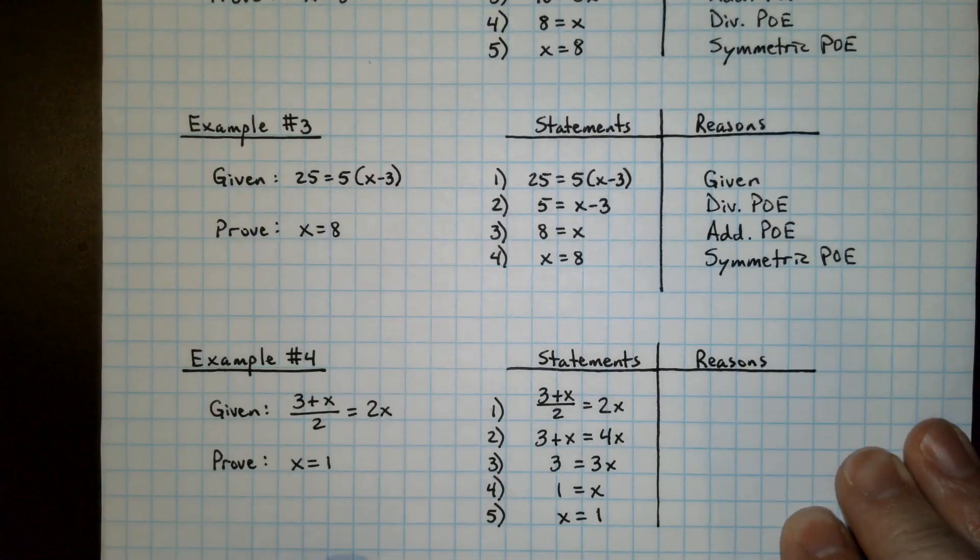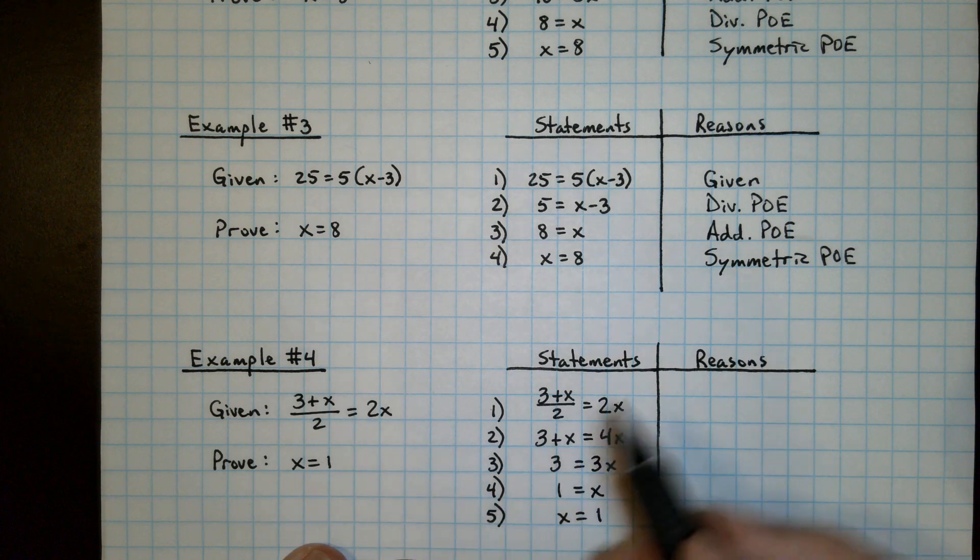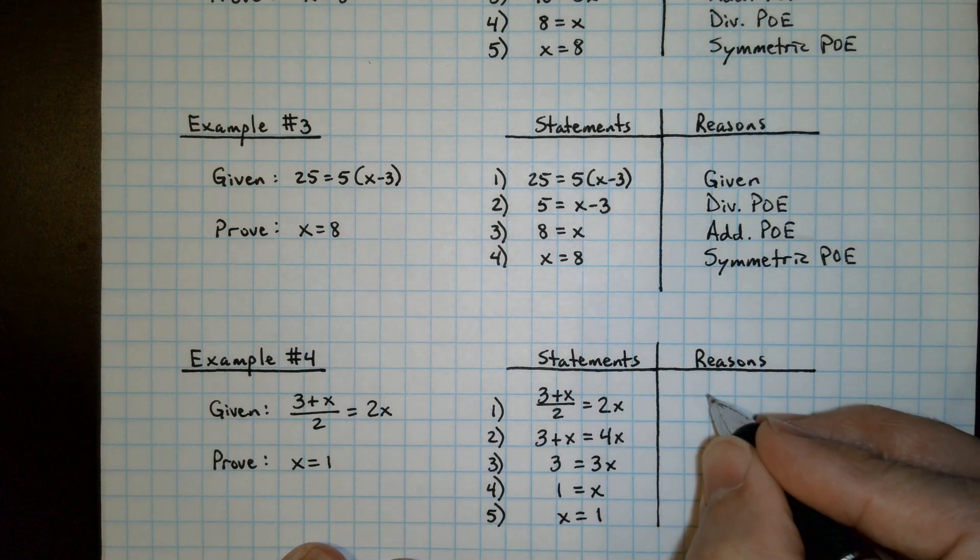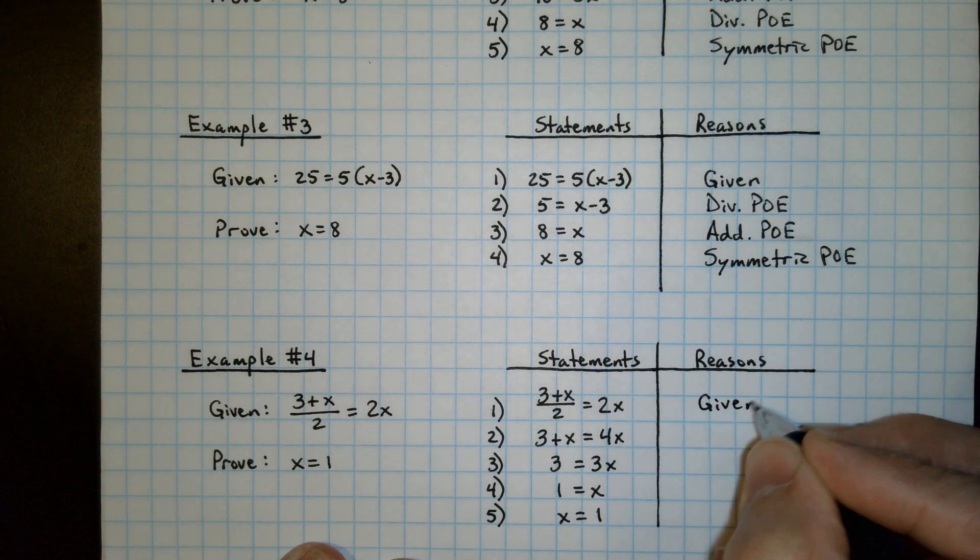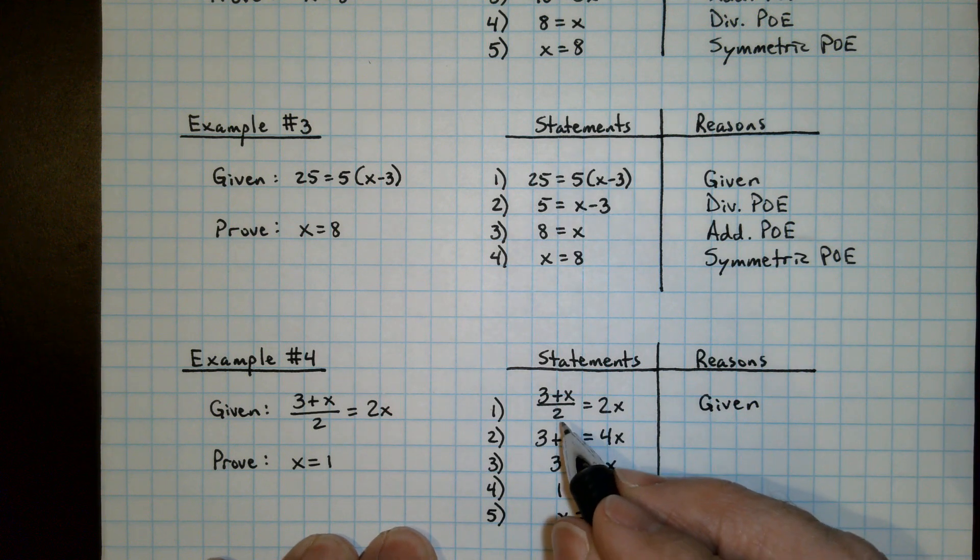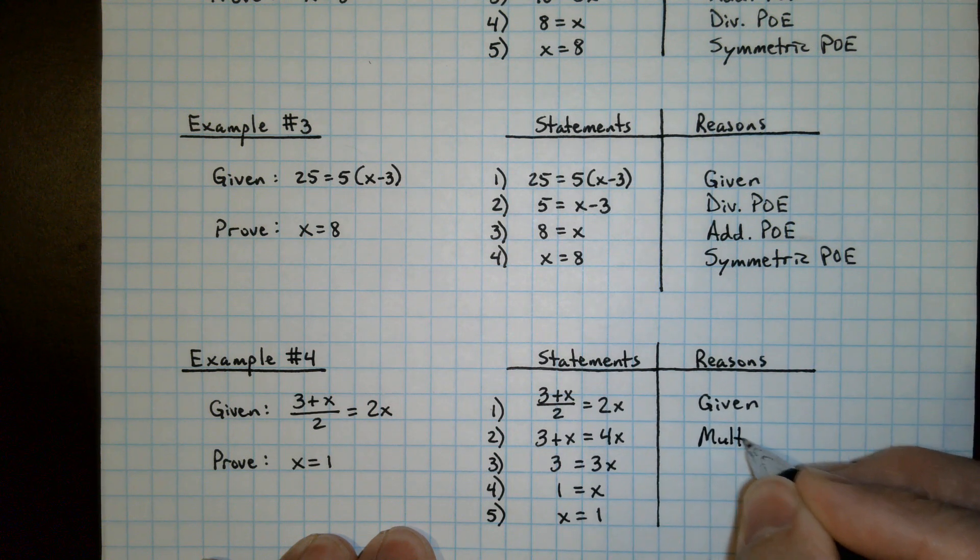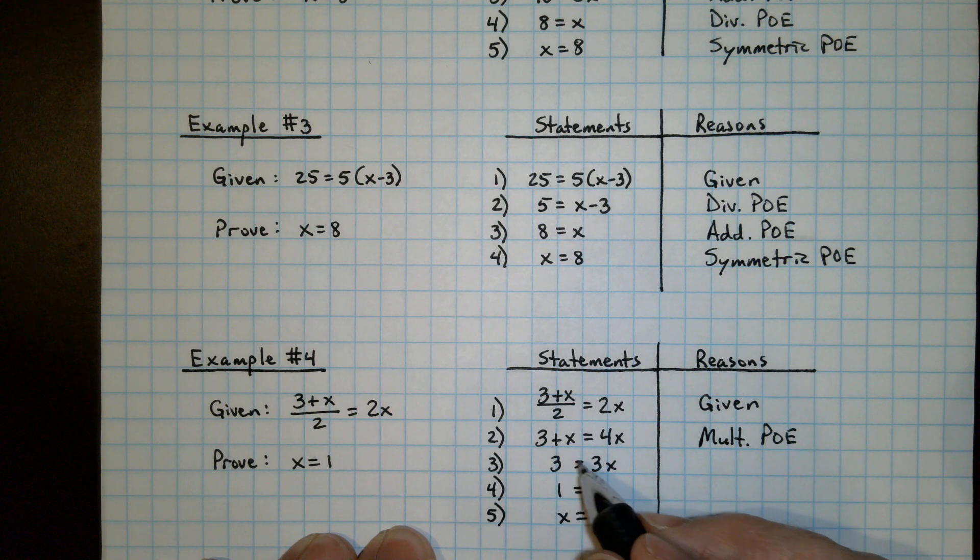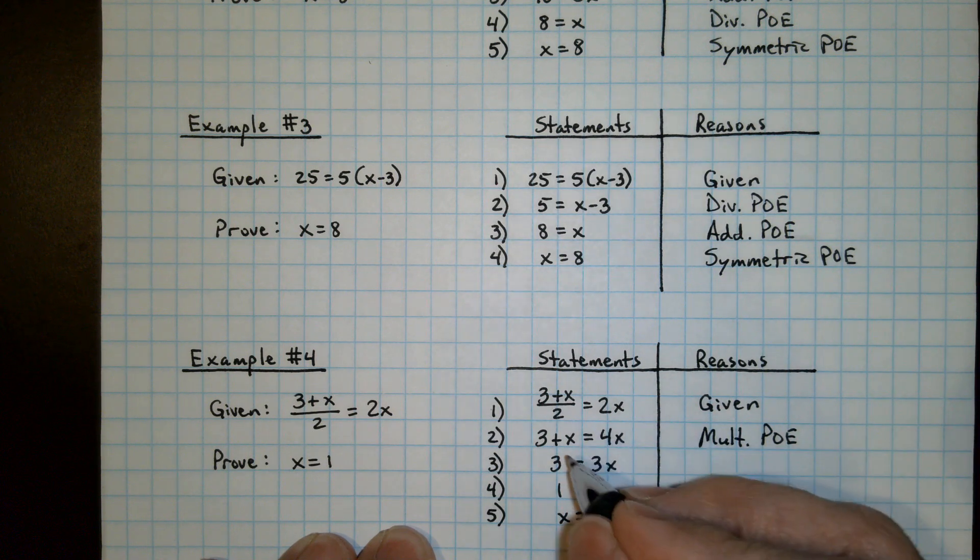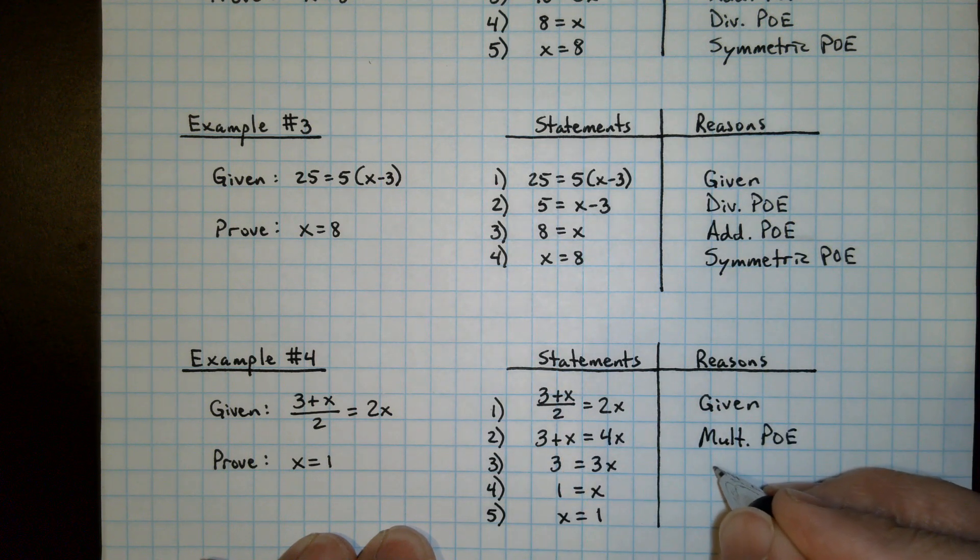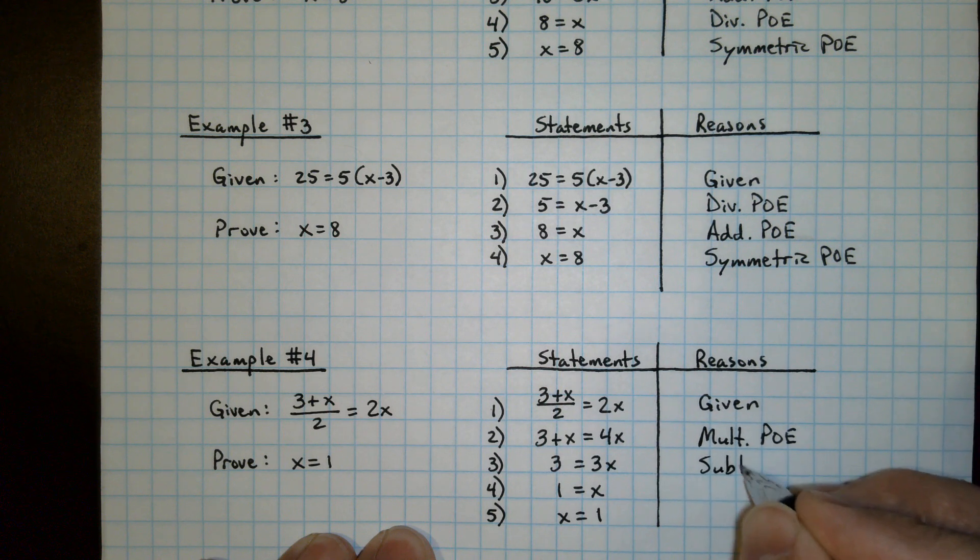Example number 4. The given information has been restated. So it is given for the reason. We're going to get rid of this fraction. So we're multiplying by 2 on each side. That's the multiplication property of equality. We subtract 1x. That is the subtraction property of equality.